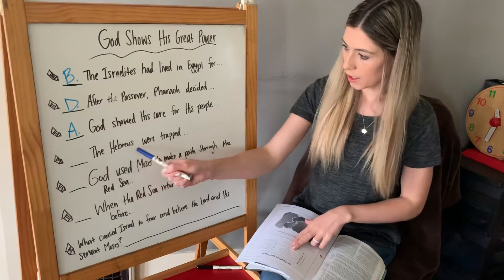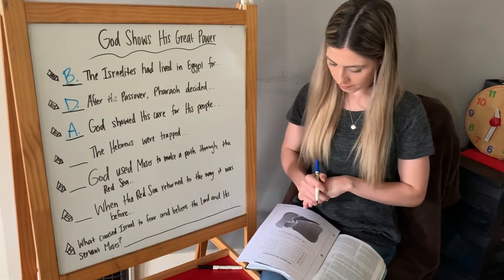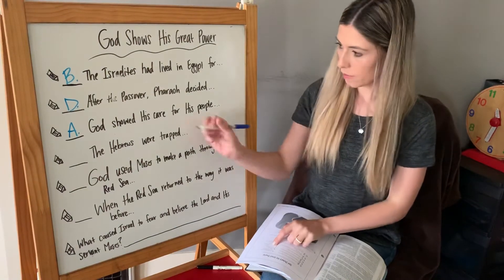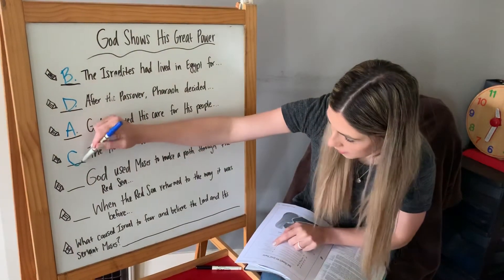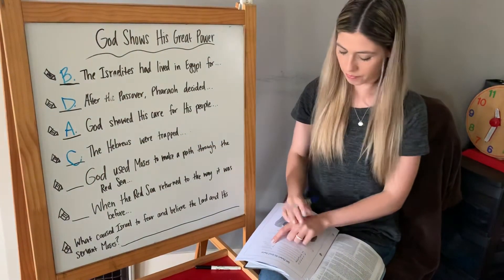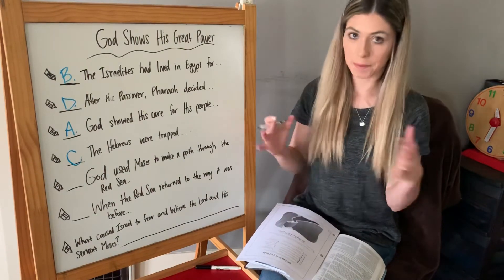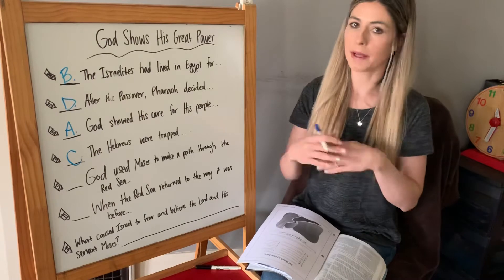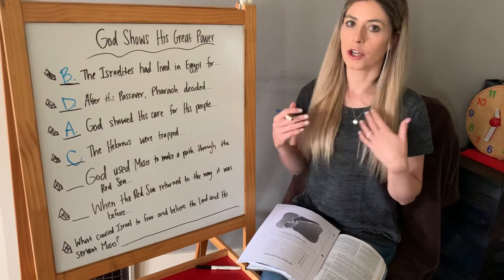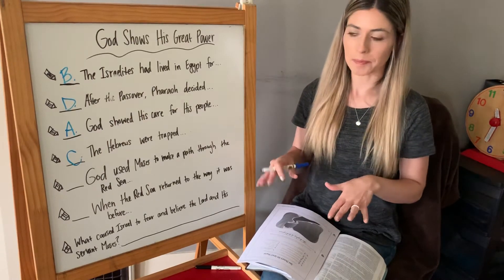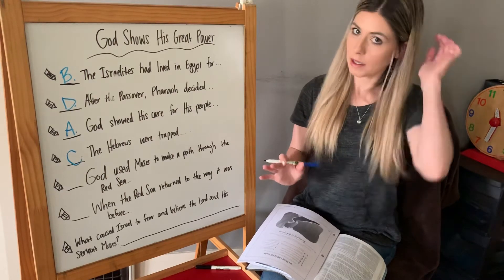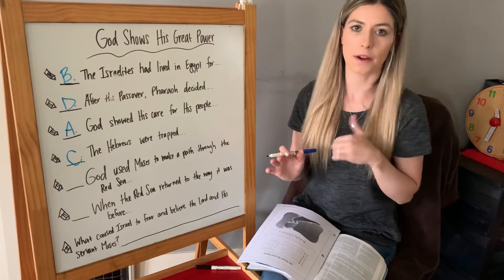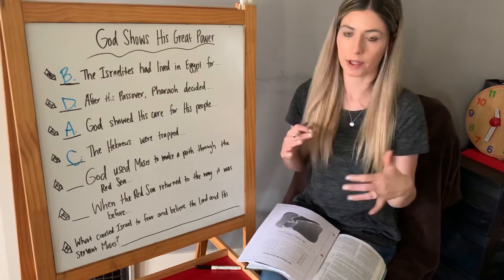The next one: the Hebrews were trapped... The answer is C, by the Red Sea. They were trapped because the Red Sea was blocking their path and there was no way to go around it. They didn't have any boats, they couldn't do anything — it was too deep to walk through. They were stuck, and Pharaoh's army was already chasing after them, so they couldn't turn around.